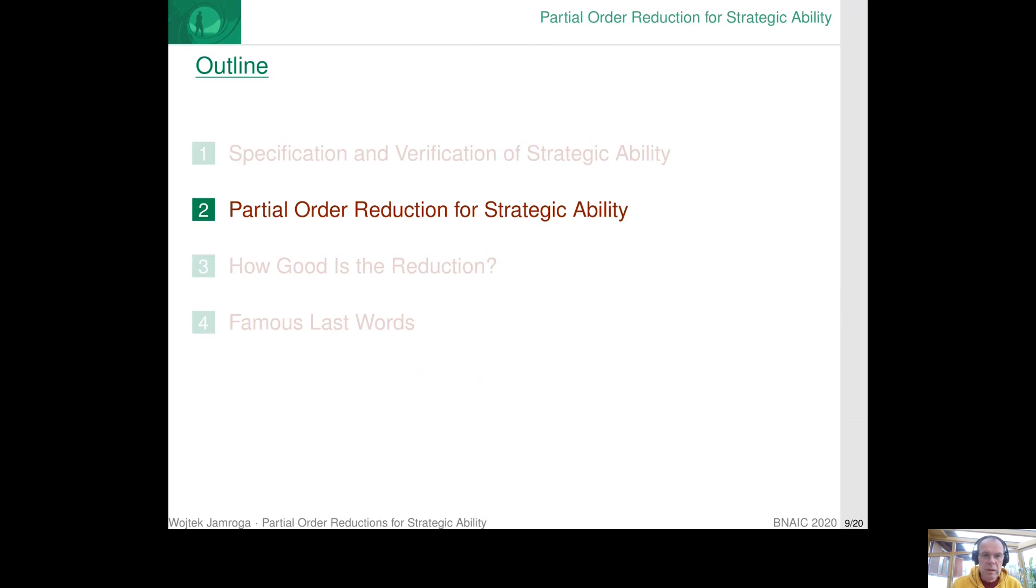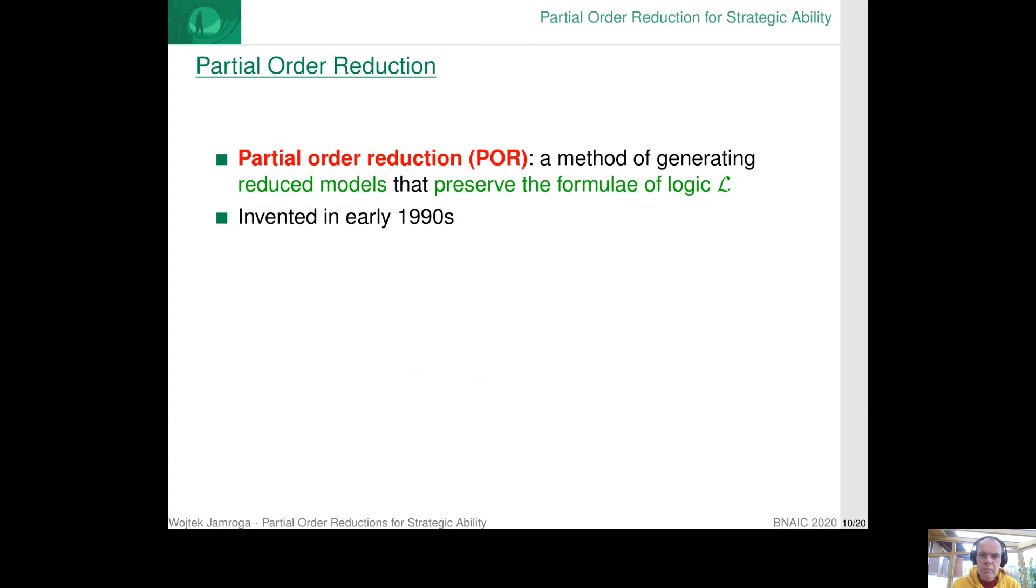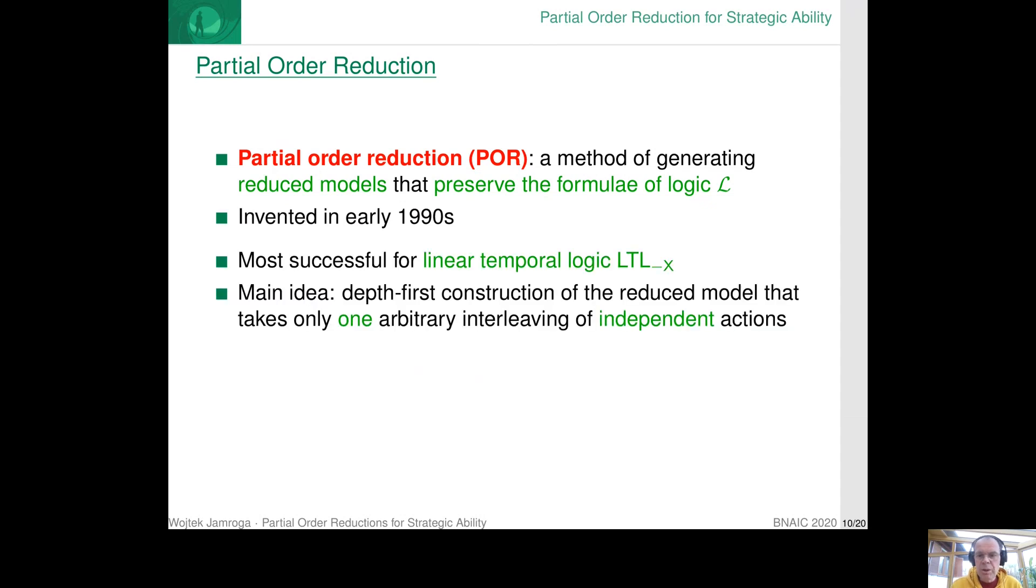So let me talk about the partial order reduction now. The technique is actually known for almost 30 years now. It was originally introduced for linear temporal logic without the next operator. So something that obviously does not allow to specify the ability or inability of some agents to achieve their goals.